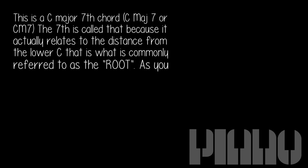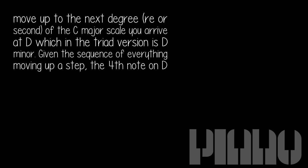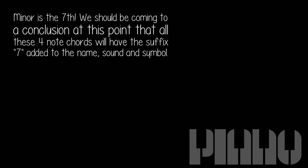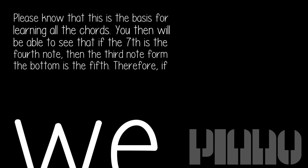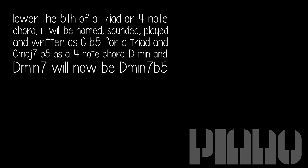The 7th is called that because it relates to the distance from the lower C, which is what is commonly referred to as the root. As you move up to the next degree — the 2nd — of the C major scale you arrive at D, which in the triad version is D minor. Given everything moving up a step, all these four-note chords will have the suffix 7 added to the name. If the 7th is the 4th note, then the 3rd note from the bottom is the 5th. Therefore, if we lower the 5th of the triad or four-note chord, it will be named, played, and written as Cb5 for a triad and CM7b5 as a four-note chord.